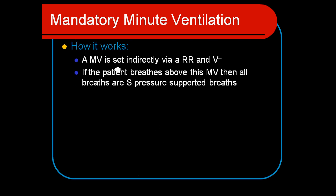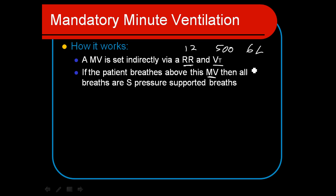The minute ventilation is set indirectly via the respiratory rate and tidal volume, just like on a regular ventilator. For example, a rate of 12 and a tidal volume of 500 mL establishes a minute ventilation requirement of six liters. As long as the patient keeps breathing above that six liters per minute, they're going to just receive regular pressure support with no mandatory or assisted breaths whatsoever.